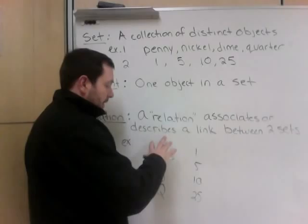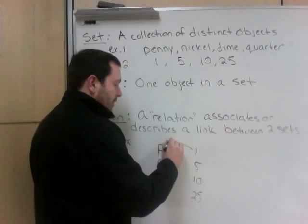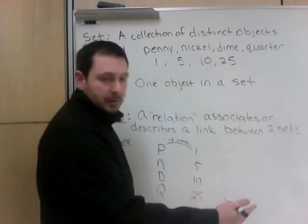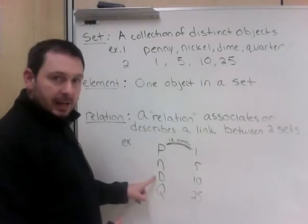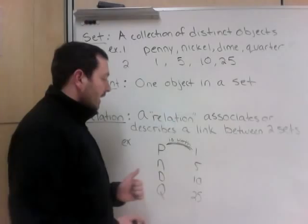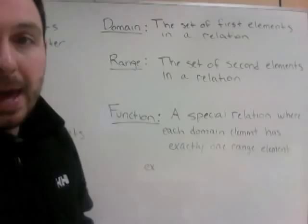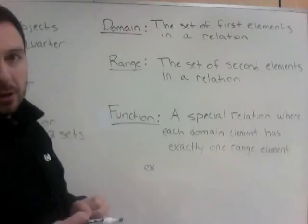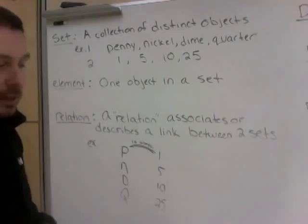The relationship between these two sets: set one on the left — penny, nickel, dime, quarter — and set two on the right — 1, 5, 10, 25. The relation is that set one is the name of the value of set two. A penny is worth one cent, a nickel is worth five cents, a dime is worth ten cents. A relationship will always link them; if they're not related, there's no relationship.